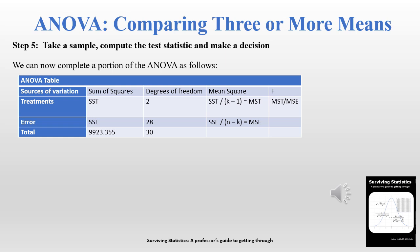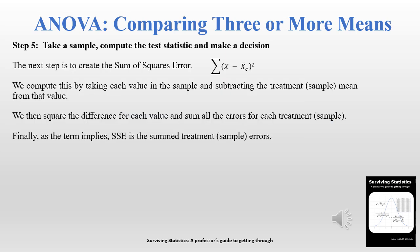We're starting to build the ANOVA table. We've already computed the degrees of freedom for numerator and denominator, and now the SS total, so we can fill those in. The next step is to compute the sum of squares associated with error (SSE). We do this by taking each value, subtracting the mean of its own group, squaring it, and summing them all up to get the SSE.